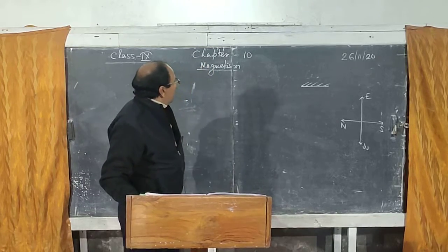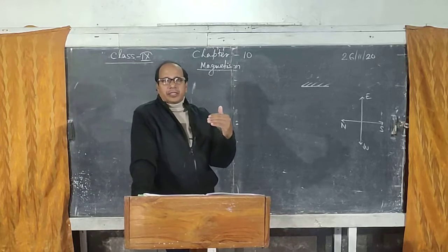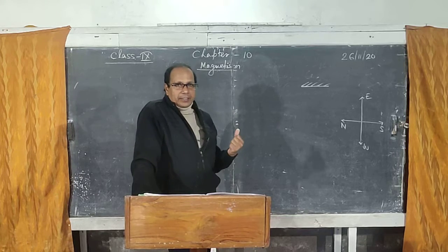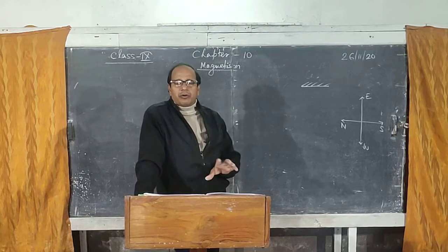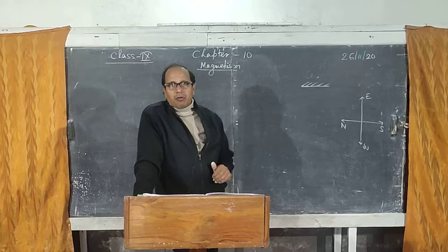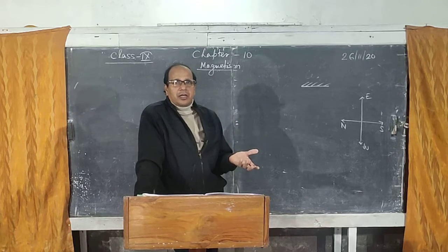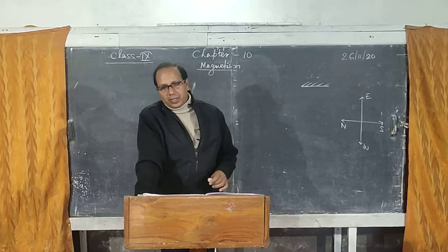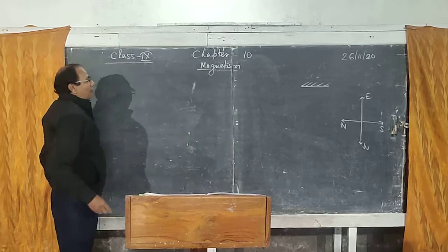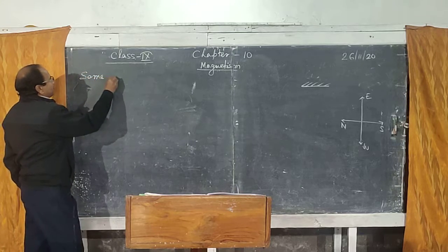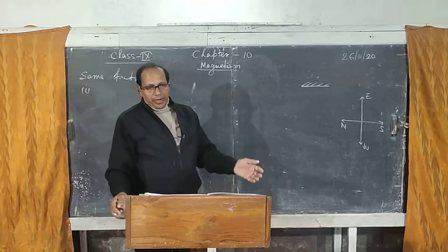Hello students, I am going to explain the last chapter, Chapter 10 - Magnetism. Before we discuss, can I ask some questions? I am very sure you know something about magnetism from lower classes. What is magnetism? It is a property of a piece of magnet by which it attracts other magnetic substances like iron. Now let me discuss some facts point-wise.